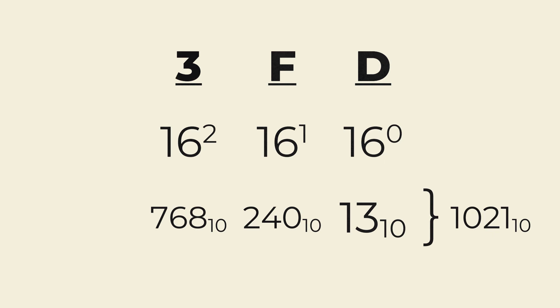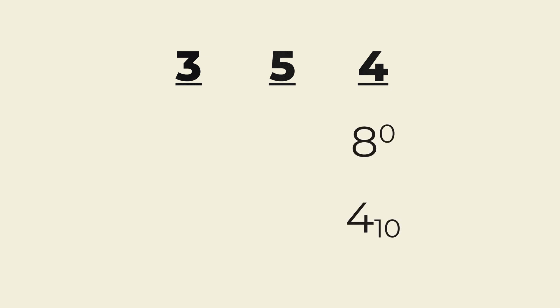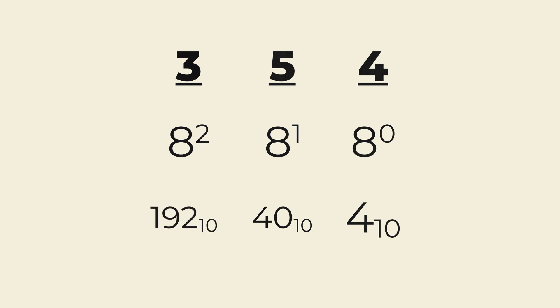Finally, our last example: octal. In the octal number 354, 4 is in the 1 spot. 4 times 1 is 4, and 4 gets added to the total. Next, 5 is in the 8th spot. 5 times 8 is 40, and 40 gets added to the total. Last, 3 is in the 64th spot, because the third power of 8 is 64. 3 times 64 is 192, and 192 gets added to the total, which would be 236 in base 10.